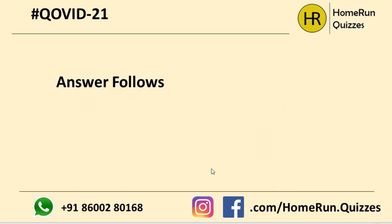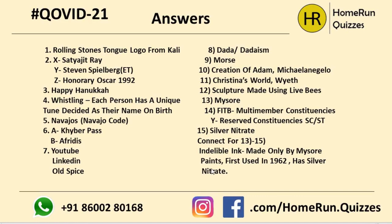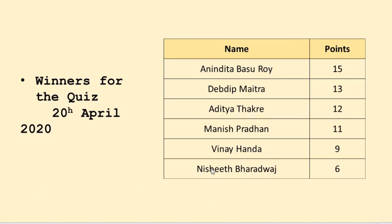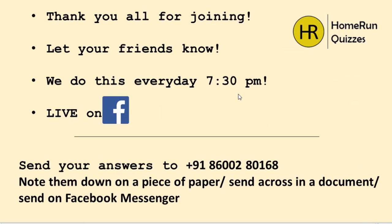So that was yesterday's set. Now, before moving on to today's quiz — winners for yesterday's quiz: Anindita Basurai topping with 15 points, Devdev Mahitra with 13, Aditya Thakere with 12, Manish Padhan 11, Binay Handar 9, Ishid Bhardwaj with 6. All the best for today. Give some quite interesting answers even if they are not correct — you'll get some brownie points.